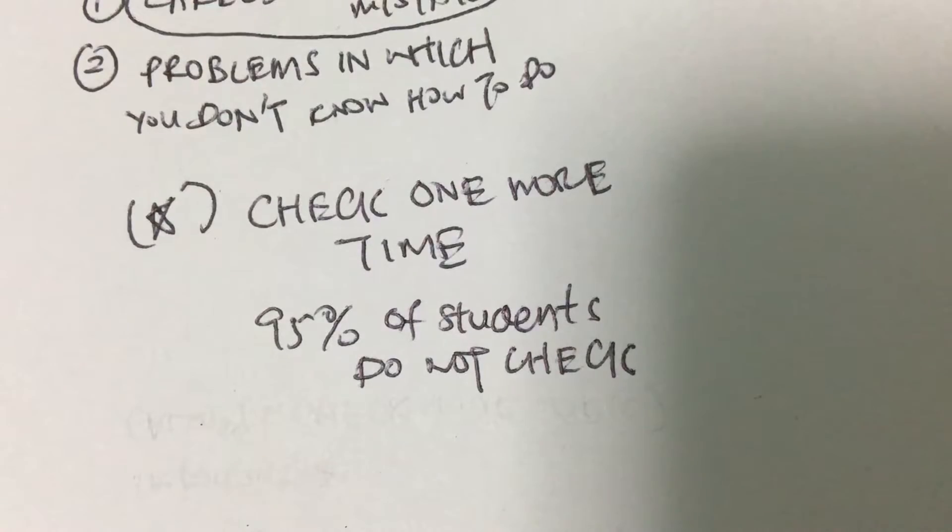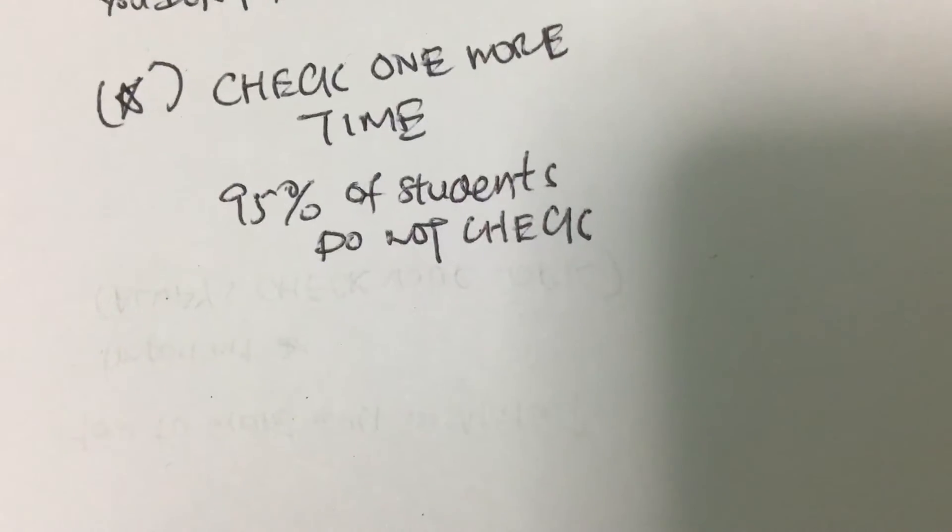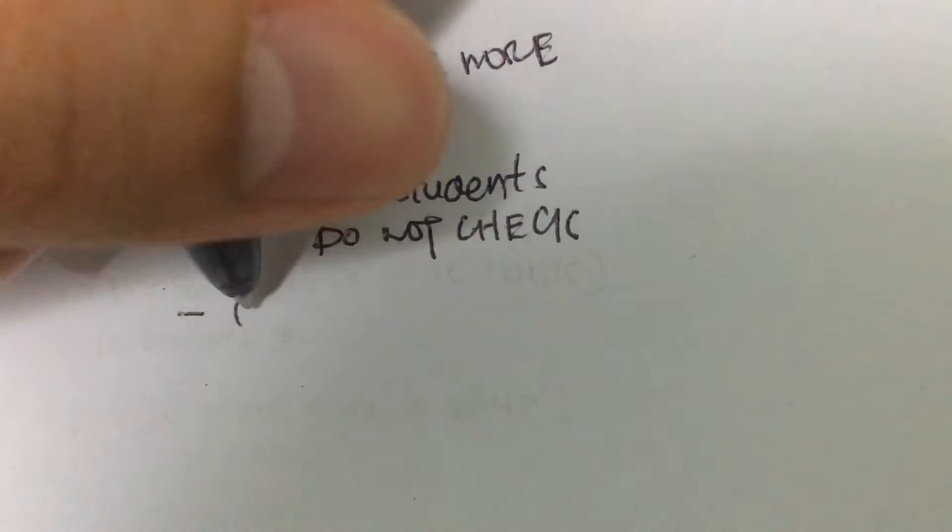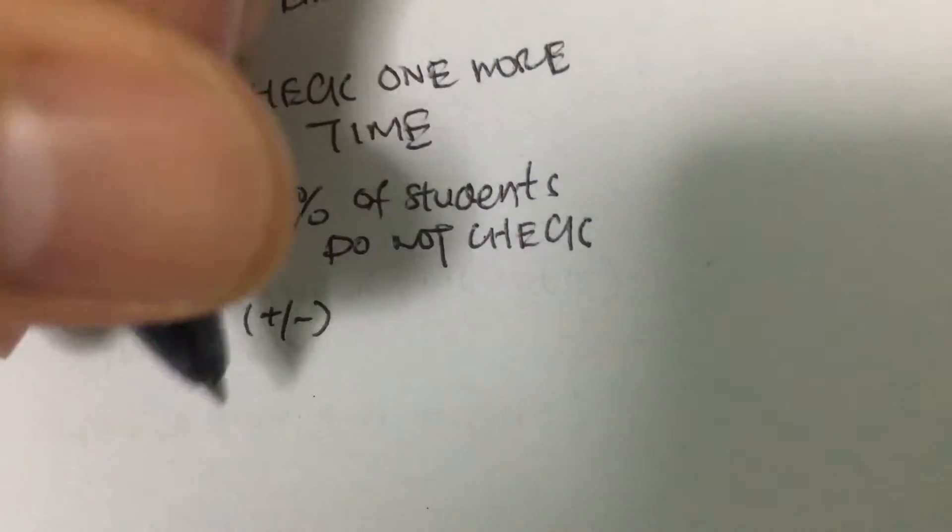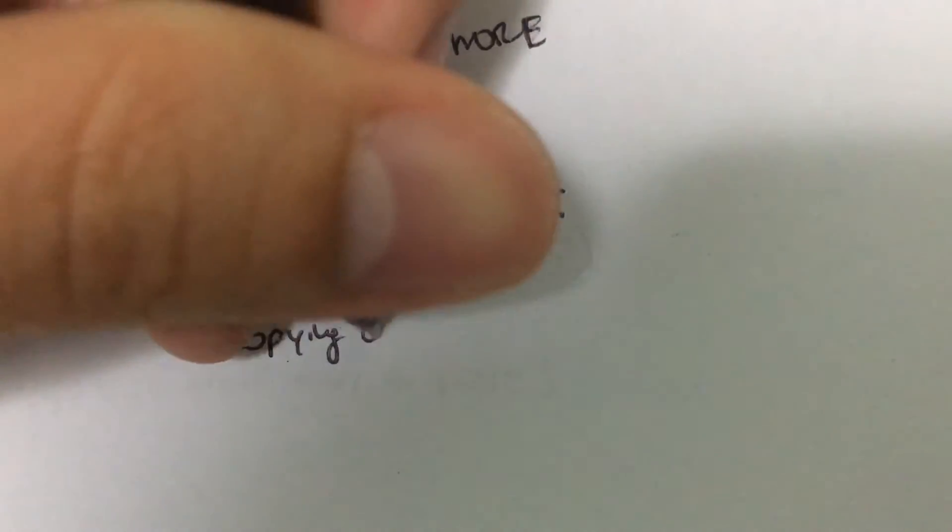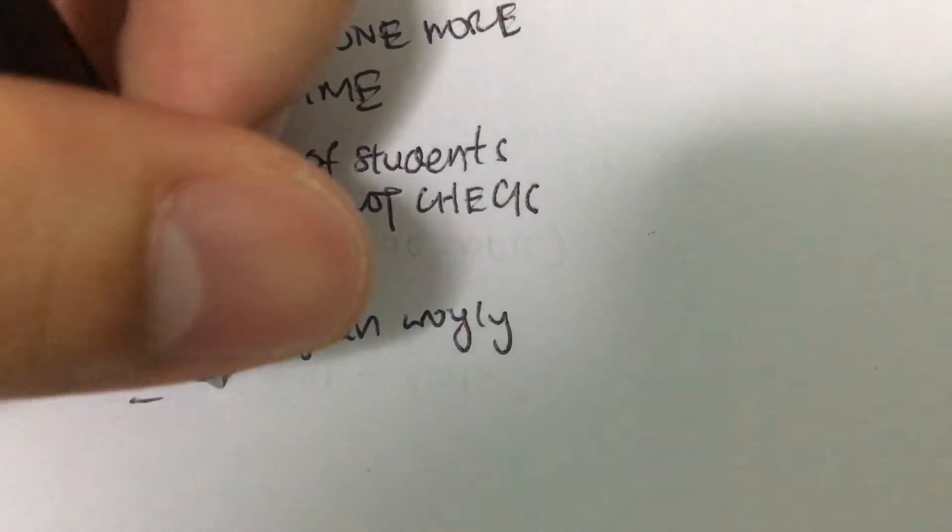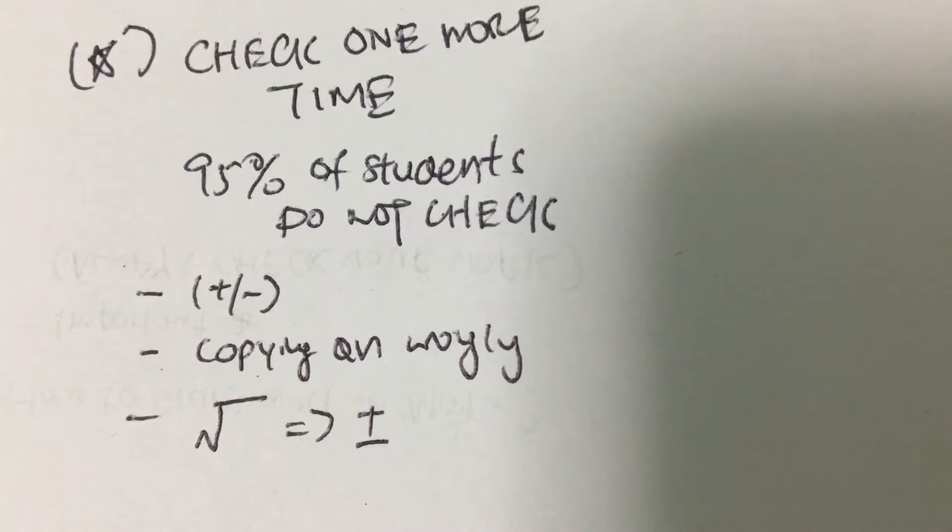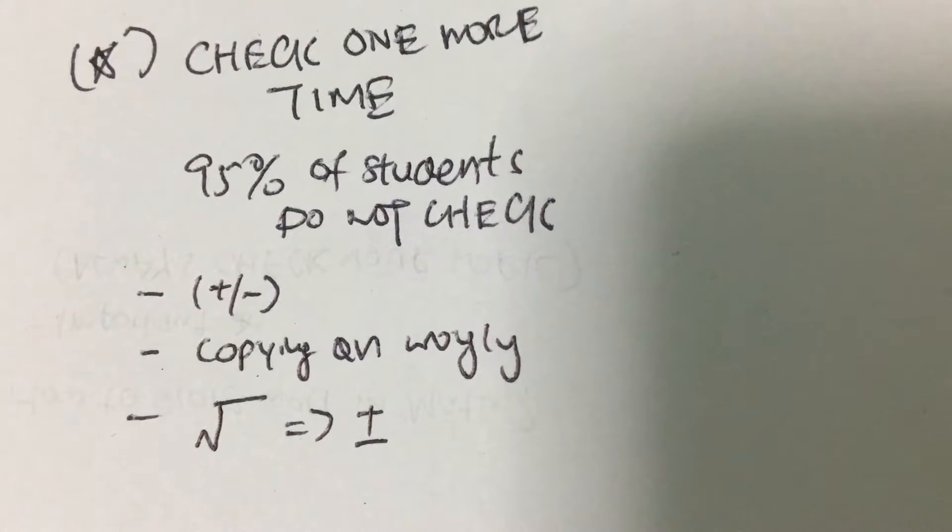There are a lot of careless mistakes that students make, such as swapping the plus-minus signs, copying questions wrongly, or forgetting that if you take the square root, you have to put a plus-minus, and so on. All these things really affect the grade of your test papers, and that is really crucial.